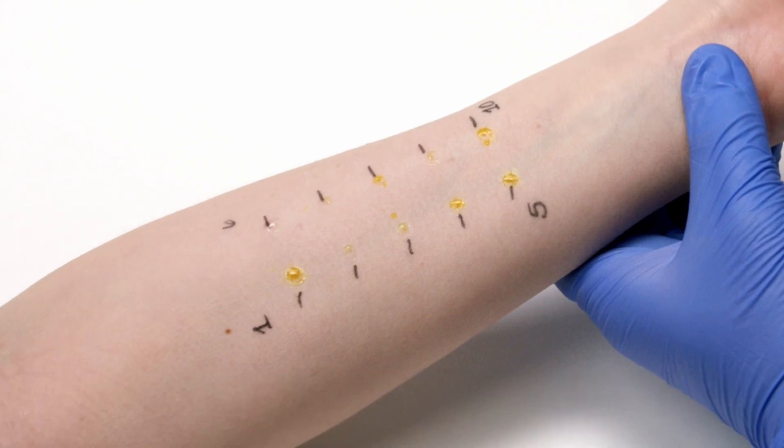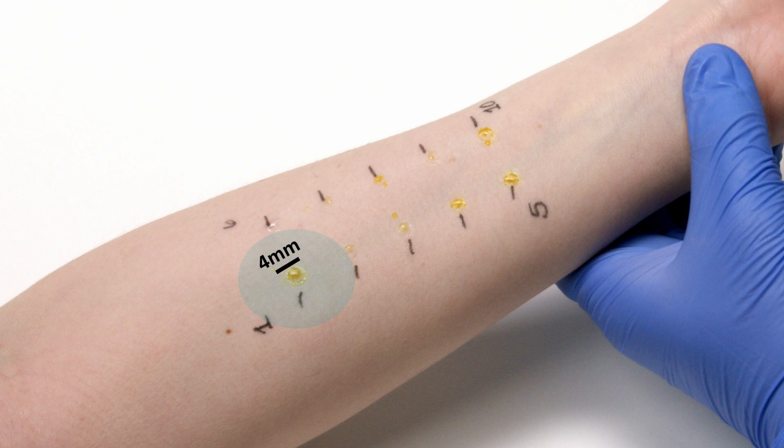Circles created by the depth control guards about 4 mm in diameter will be seen at the test site, indicating the correct amount of pressure was applied.